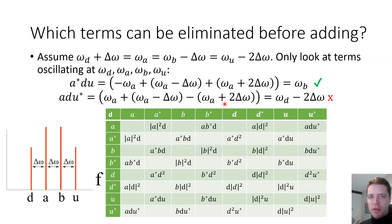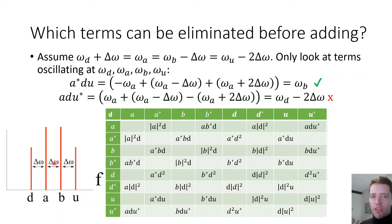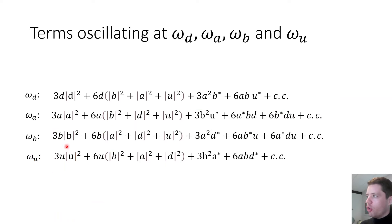Narrowing the analysis to only frequencies omega_D, omega_A, omega_B, and omega_U, we can drop further terms. For example, A*DU survives because it oscillates at omega_B, whereas ADU* does not — it corresponds to a frequency two delta-omega below. Assuming equal spacing delta-omega between all four frequencies, we get simplified expressions for the field components at each of the four frequencies.